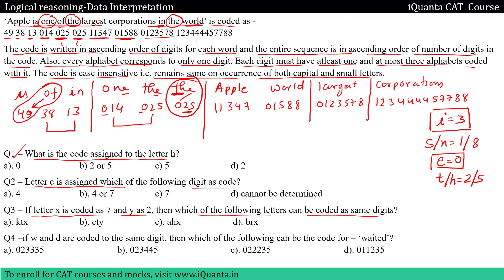Now if we talk about 'apple' and 'world', we can see that between 'apple' and 'world' we have only one letter common, which is L. L is in 'apple' as well as in 'world'. And when we compare the digits, the only digit common is 1. So definitely L will be 1. I will assign 1 to L.